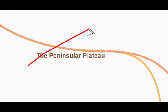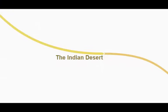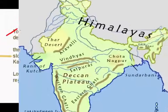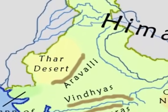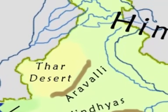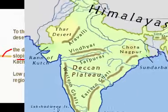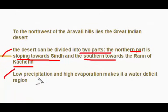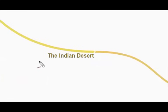Moving on to the Indian desert: to the northwest of the Aravalli hills lies the great Indian desert. The desert can be divided into two parts — the northern part sloping towards Sindh, and the southern part, the Rann of Kutch in Gujarat. Low precipitation and high evaporation make it a water-deficit region.